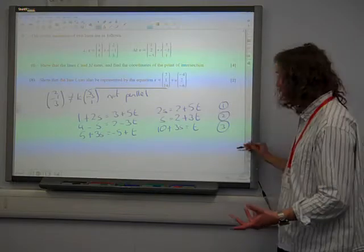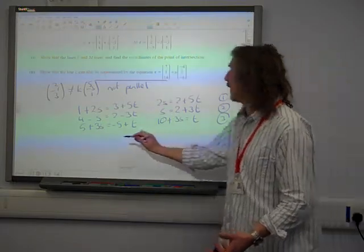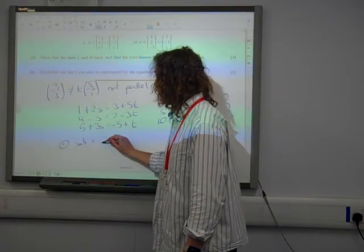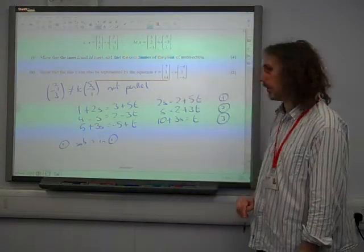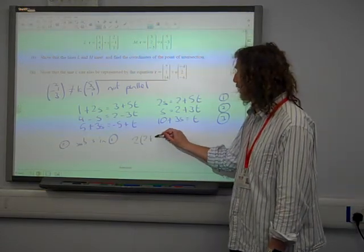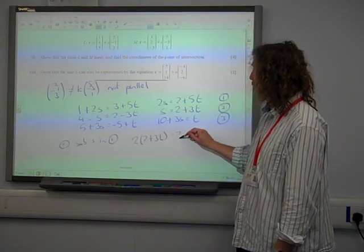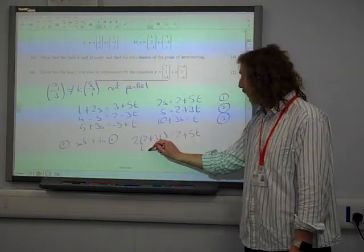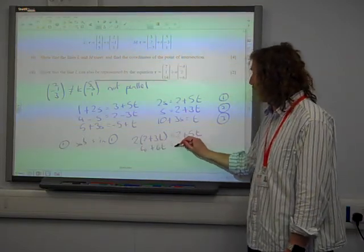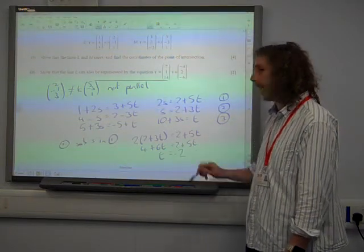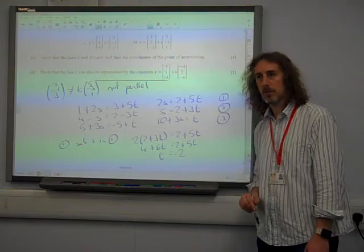Let's work on the first two. From two, we're going to sub s into equation one. Seems like a sensible thing to do. That gives us two lots of 2 plus 3t is 2 plus 5t. So 4 plus 6t is 2 plus 5t. That's quite neat. That gives me t is minus 2. Brilliant.